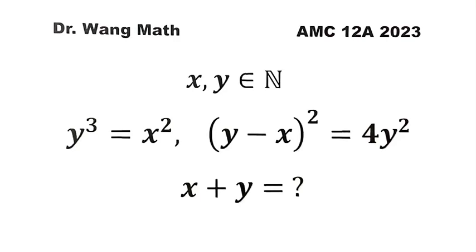In this video, we'll be solving a question from 2023 AMC 12A. Given x, y are positive integers, y cubed equals x squared, and (y minus x) squared equals 4y squared, then what is x plus y?